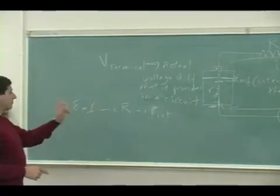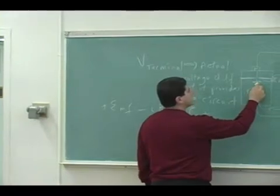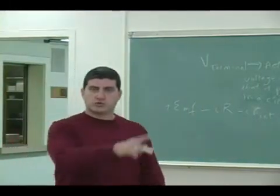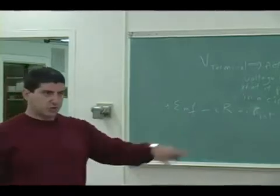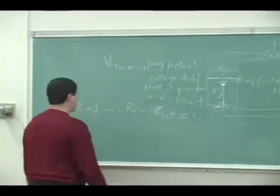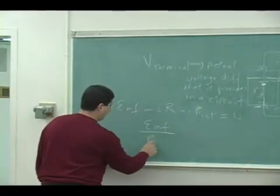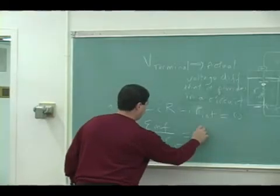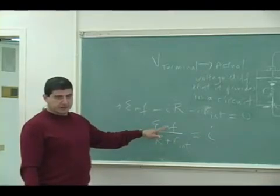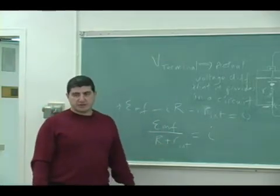So plus EMF minus IR minus IR int is equal to, you end up back to where you began. Let's say you began right there. I can begin a circuit anywhere and end at that same spot. I should be able to go around the whole loop and justify all my potential gains, all my potential losses, and I should go back to zero again. So that's equal to zero now. According to this, the current in the circuit will equal EMF over R plus R int, which makes sense.